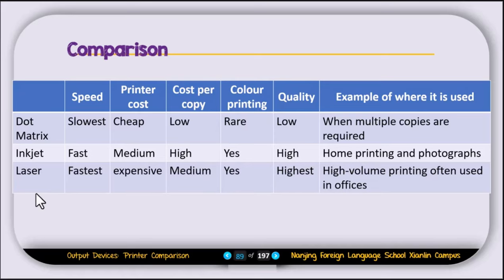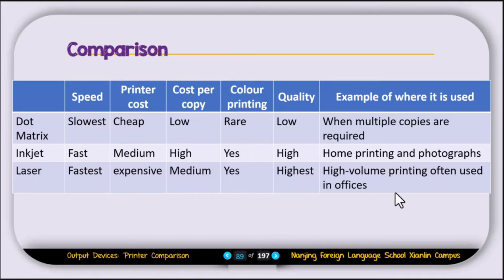The laser printer is the newest technology and is very fast. It is expensive to buy, but the cost per copy is medium. It can print color documents and the print quality is the highest among the three. This type of printer is typically used in high-volume printing, often in offices.